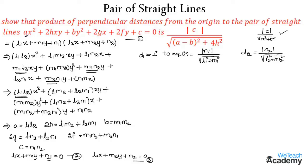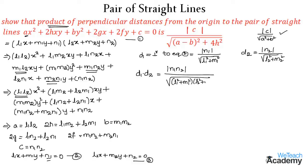We need to show the product d₁·d₂. Multiplying, we get |n₁·n₂| in the numerator, divided by √((l₁² + m₁²)(l₂² + m₂²)).